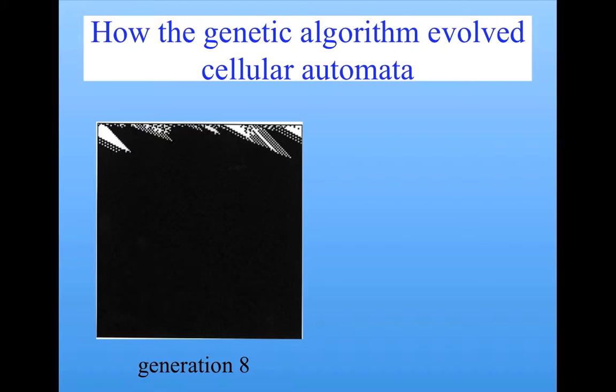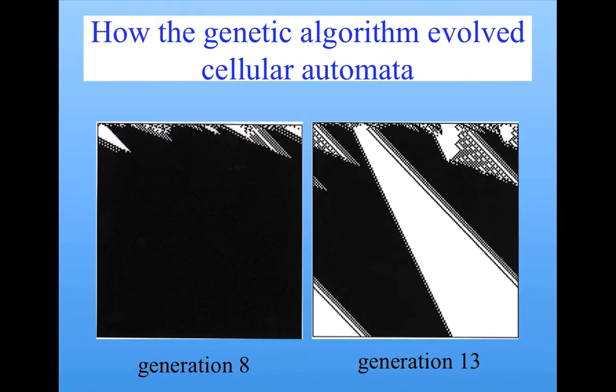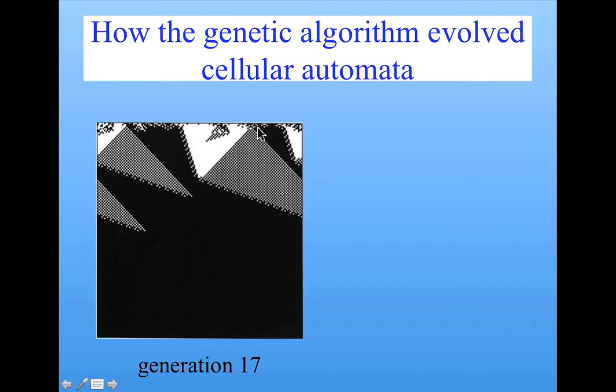Which was better than the random cellular automata in the initial population, which got fitnesses of zero. So this was a big innovation. It's like always saying yes. You get 50% of the yes or no questions right. So the genetic algorithm discovered that. It went on to make gradual improvements to its strategy. But I'm going to focus on one particular improvement. At Generation 17, the best individual in the population looked a lot like that one that I showed you a few slides ago, where we have this checkerboard pattern and these regions of black and white.